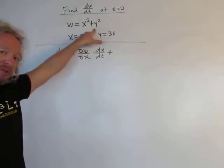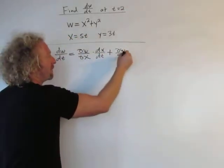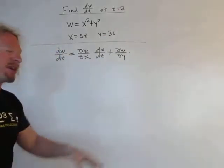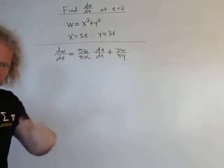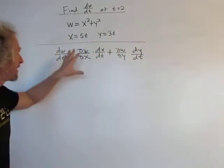Plus, then you take the partial of w with respect to y, so del w del y, times the derivative of the inside. So here y is your inside function, so it's dy dt. Because y is a function of t. So that's the idea.